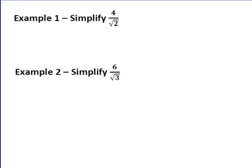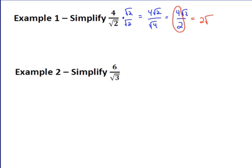Let's look at a few examples. Four over the square root of two — I multiply the denominator by the square root of two, whatever that denominator is, that's what I multiply by. The numerator becomes four times square root of two; since those are different types of things I just leave them as four square root of two. Square root of two times square root of two equals the square root of four, and the square root of four is two. Four and two simplify down, so we end up with two times the square root of two.